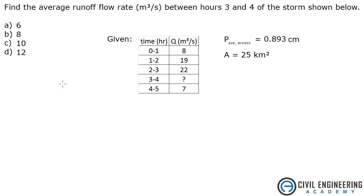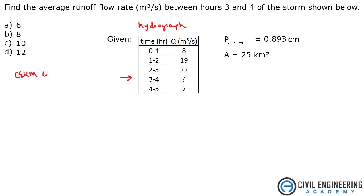The problem states: find the average runoff flow rate in meters cubed per second between hours 3 and 4 of the storm shown below. So we're asked to find hours 3 to 4, which is found right here. This is called a hydrograph. And if you're using the Civil Engineering Reference Manual, Chapter 20 goes over hydrographs.